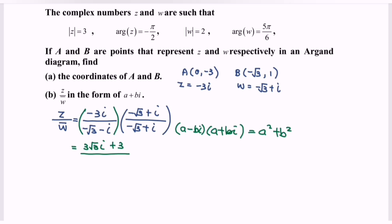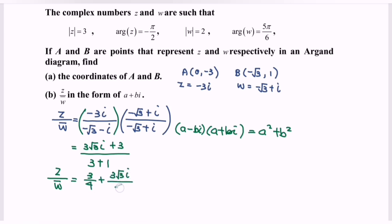For the denominator, we apply the formula a squared plus b squared for the product of conjugates, where a is negative root 3 and b is 1. So a squared gives 3 and b squared gives 1, making the denominator 4. Therefore, z over the conjugate of w equals 3 over 4 plus 3 root 3 i over 4.